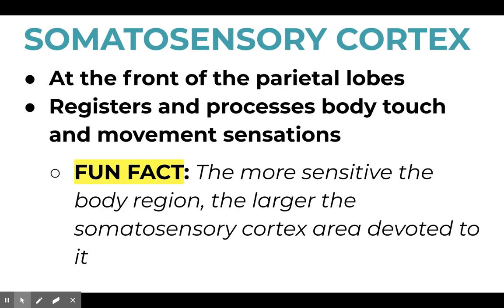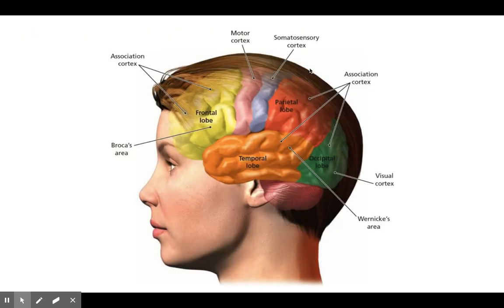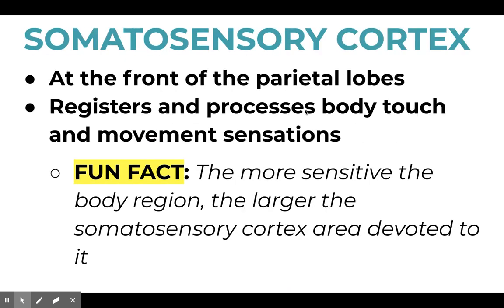Next we have the somatosensory cortex. This is at the front of the parietal lobes, and it registers and processes body touch and movement sensation. This has to do with movement, but also more of these sensations as well. It's right behind here — the somatosensory cortex is by the parietal. A fun fact about this is the more sensitive the body region, the larger the somatosensory cortex area devoted to it.